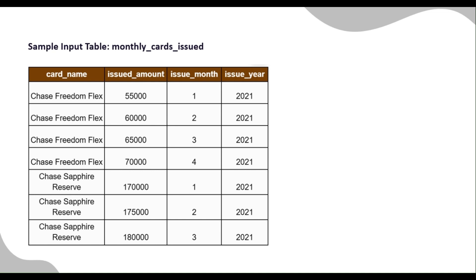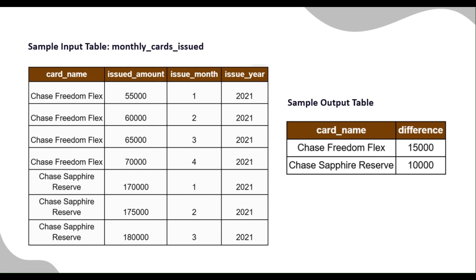For the Sapphire Reserve card, the issued amounts are: January — 170,000, February — 175,000, and March — 180,000. The maximum issued amount is 180,000 and the minimum is 170,000, so the difference is 10,000. In the output table, the Freedom Flex card shows a difference of 15,000 and the Sapphire Reserve card shows a difference of 10,000, sorted from largest to smallest difference.